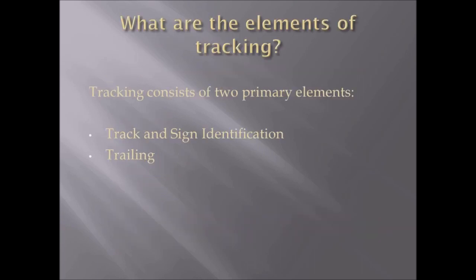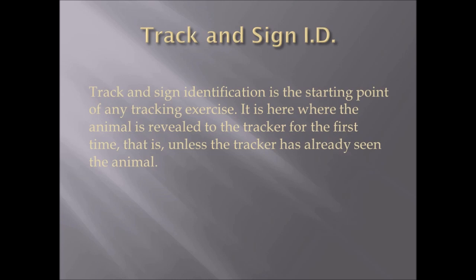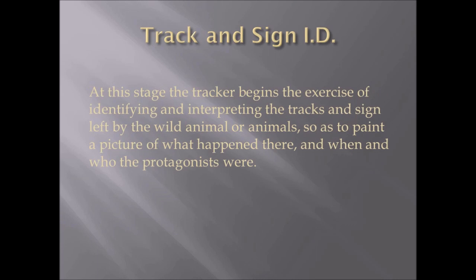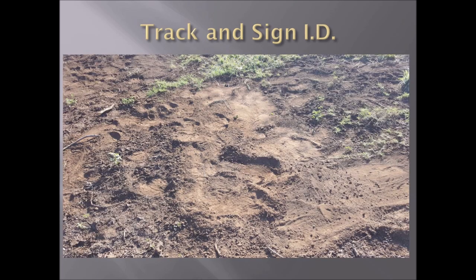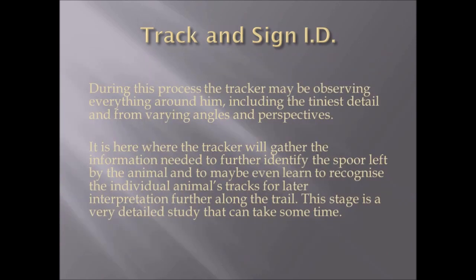Tracking consists of two primary elements: tracking sign identification and trailing. Tracking sign identification is the starting point of any tracking exercise — it is here where the animal is revealed to the tracker for the first time. At this stage, the tracker begins identifying and interpreting the tracks and sign left by wild animals to paint a picture of what happened, when, and who the protagonists were. Here we have a sort of resting patch for a giraffe.